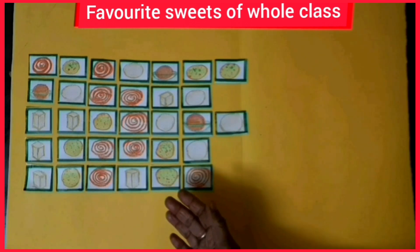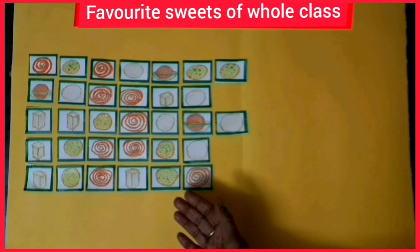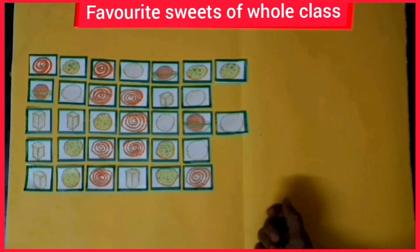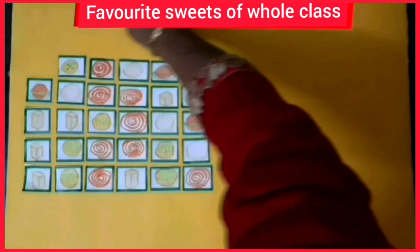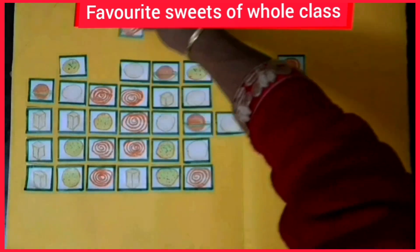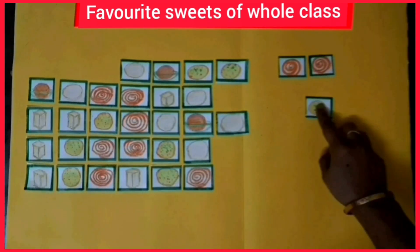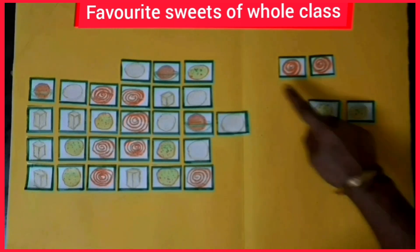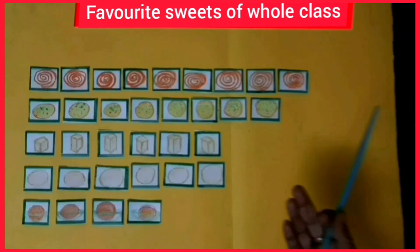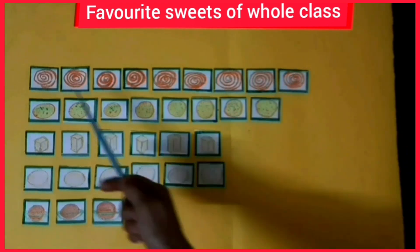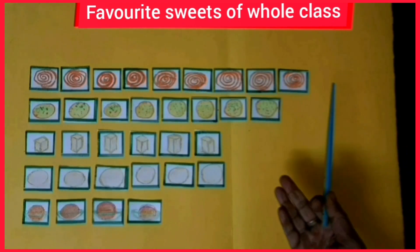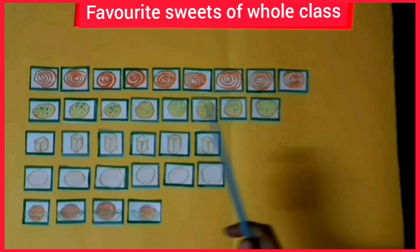Now, according to the liking of sweets, we will distribute them into different groups. We will see how many children like jalebi and how many children like barfi. In this way, we will distribute these sweets into five different groups and count how many children like each different sweet.